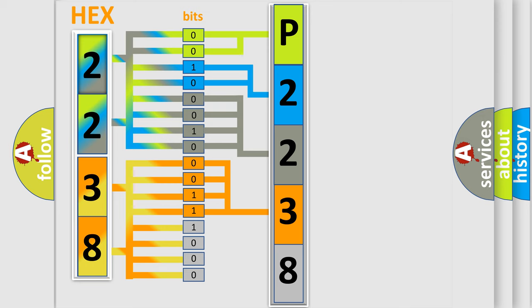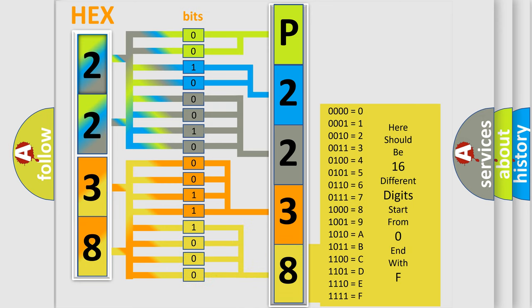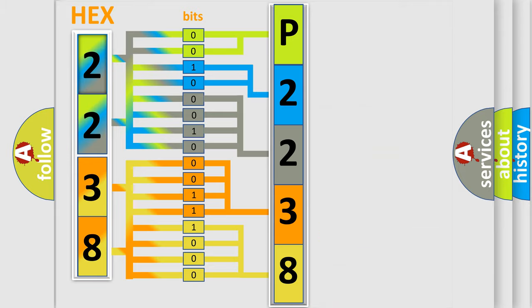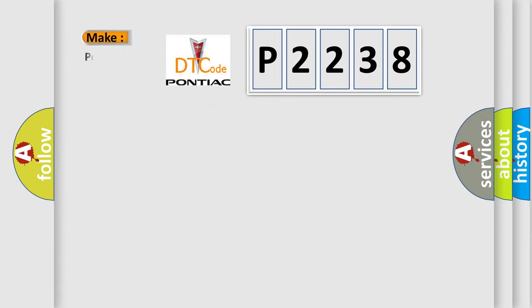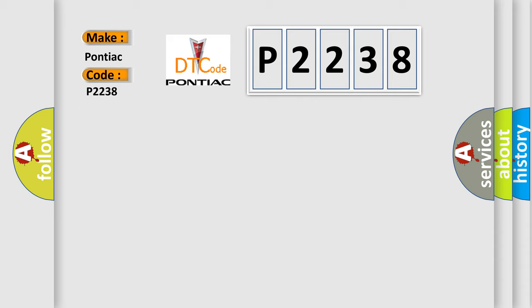A single byte conceals 256 possible combinations. We now know in what way the diagnostic tool translates the received information into a more comprehensible format. The number itself does not make sense to us if we cannot assign information about what it actually expresses. So, what does the diagnostic trouble code P2238 interpret specifically for Pontiac car manufacturers? The basic definition is: APV stuck open, number one.